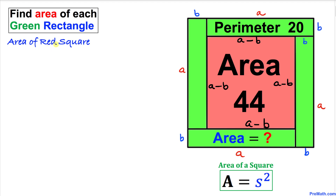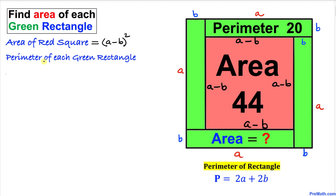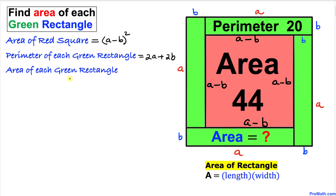Now let's find the area of this red square in terms of a and b. The formula for the area of a square is A equals s squared, where s represents the side. In our case the side length is a minus b, so that is going to be equal to (a minus b) squared. Now let's find the perimeter of each green rectangle in terms of a and b. The formula for the perimeter of a rectangle is 2a plus 2b, and the area of each green rectangle is a times b.